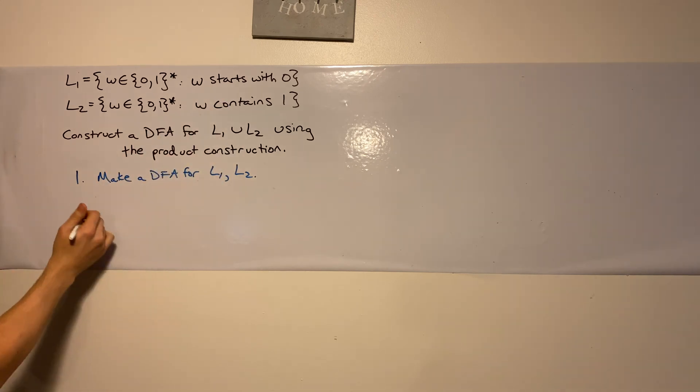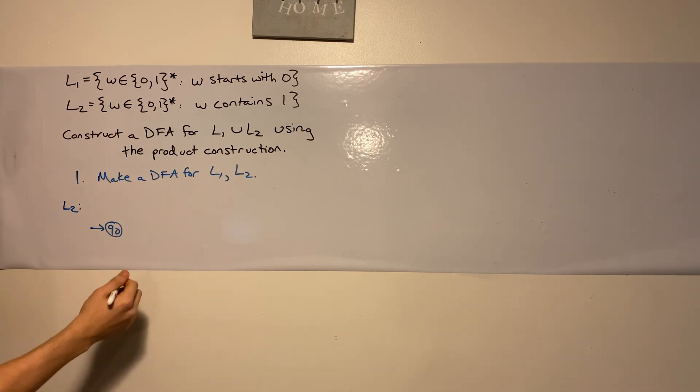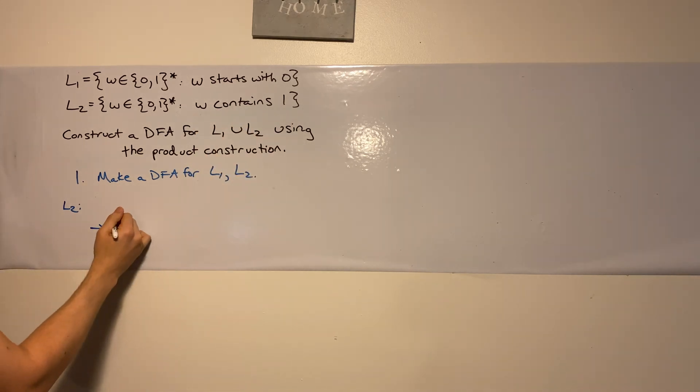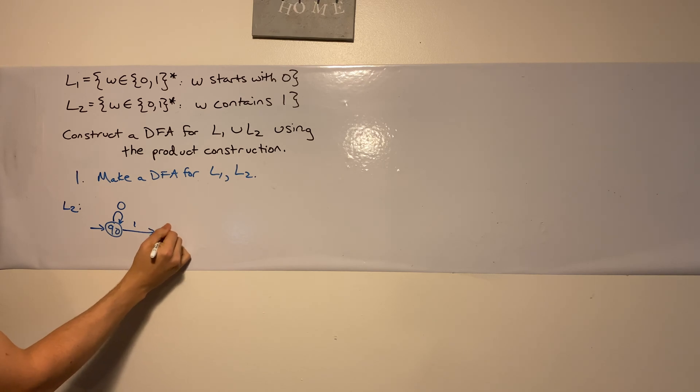So L2 is pretty easy. So let's put L2 right here. And I'm going to have its state Q0. If it's just a string of zeros, we should never accept it because it must contain a 1. So I'm going to have a self loop here on 0. And if it has a 1, I'm going to go to a state where I will always accept. So no matter what the rest of the string is, I'm going to accept it.